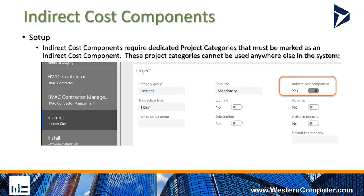The indirect cost components require a dedicated project category. What makes it a dedicated project category is marking the indirect cost component setting on the project category. Once that is set to yes, that category can only be used in the indirect cost component area — you won't see this project category anywhere else in the system. It will be hidden once that setting is set to yes.